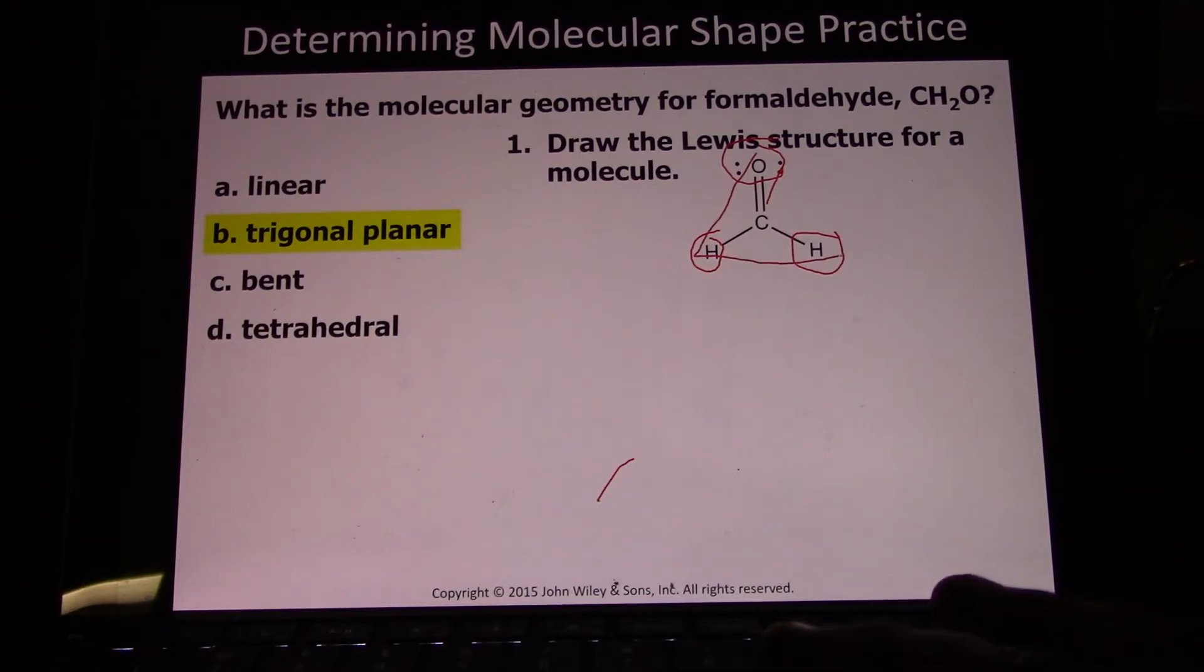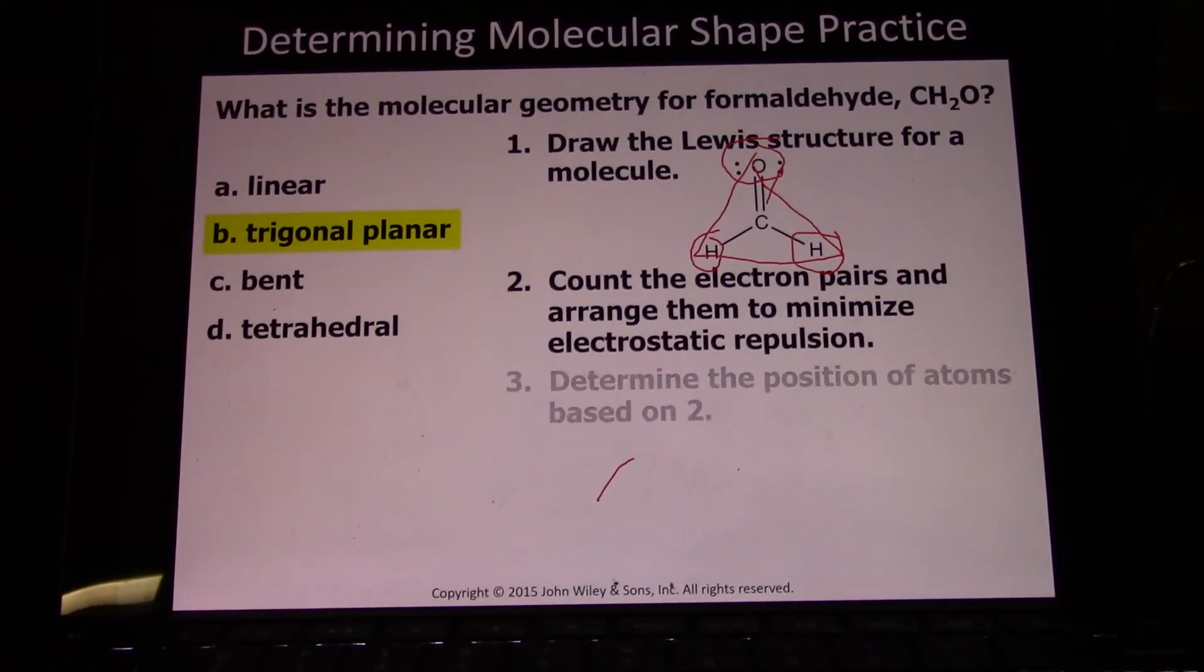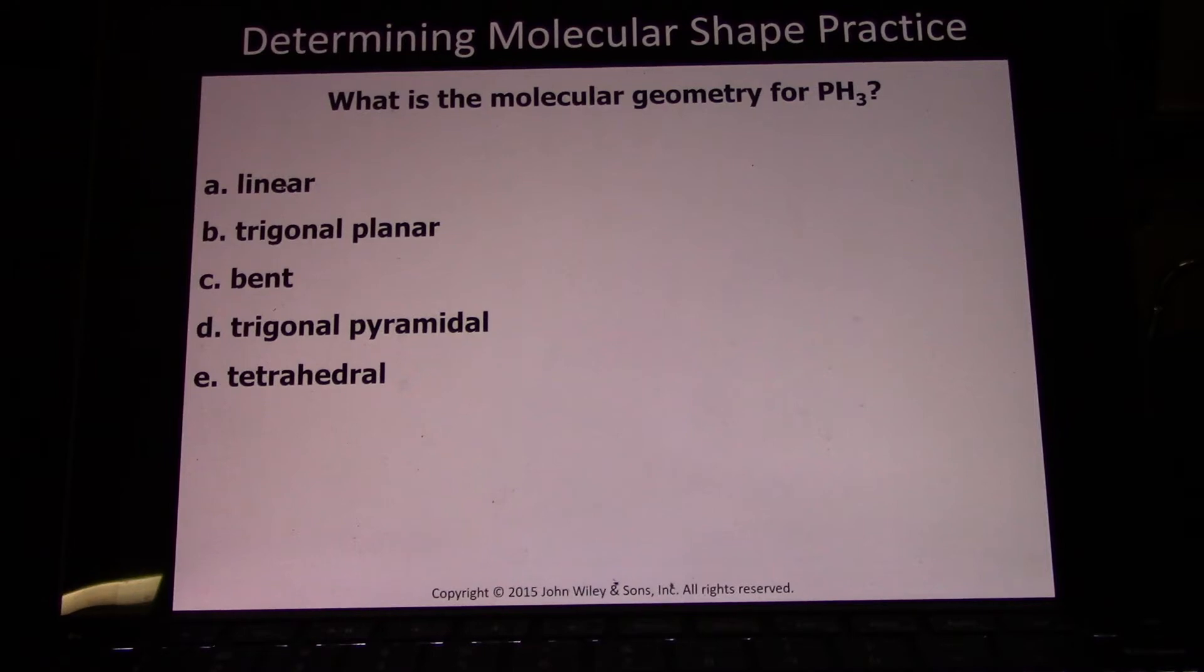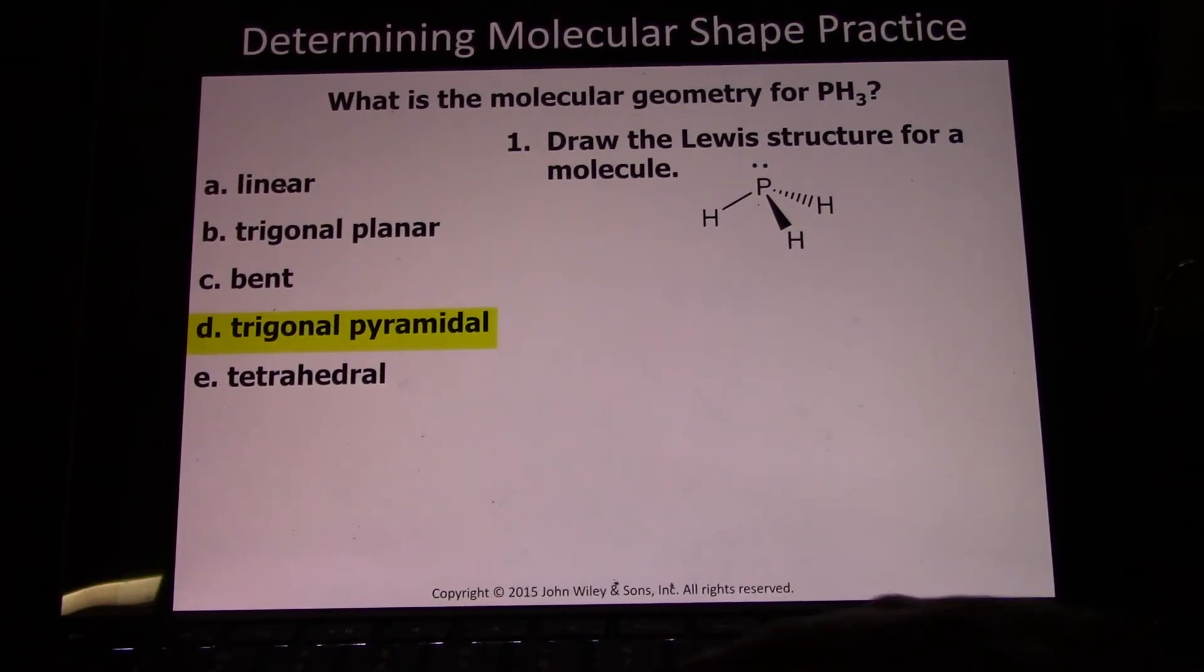Phosphine, PH3, will be just like ammonia because phosphorus is in group 5, just like nitrogen—trigonal pyramidal. Notice it's not trigonal planar because it does have this fourth electronic geometry, but when you name the structure, you only use the atoms. They're not on the same plane because that fourth one pushed the other three down.